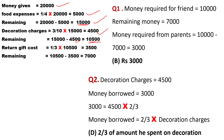Return gift cost: one-third of the remaining Rs 10,500 = Rs 3,500. Subtracting from 10,500: remaining is Rs 7,000. Question number one — money required for friend is Rs 10,000. Remaining money is Rs 7,000. So money required from parents = 10,000 − 7,000 = Rs 3,000. Option B is the correct answer.